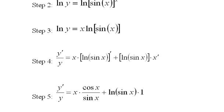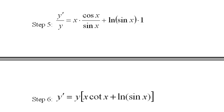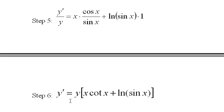The next step would be to simplify this to the cotangent and then bring the y up front. In other words, multiply both sides of the equation by y. So I now have y prime equals y times x cotangent x plus the log of the sine of x.